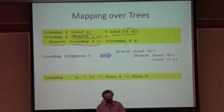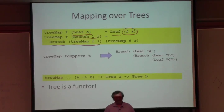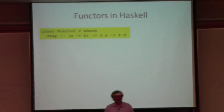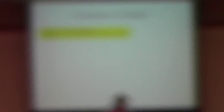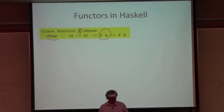What's the type of tree map? Well, it has a polymorphic type, so for any types A and B, if you give it a function from A to B and a tree labelled with A's, it'll give you a tree labelled with B's. You've all been studying category theory this week, so you know what that means, don't you? It means tree is a functor. And one of the nice things about Haskell is that we can say that explicitly.